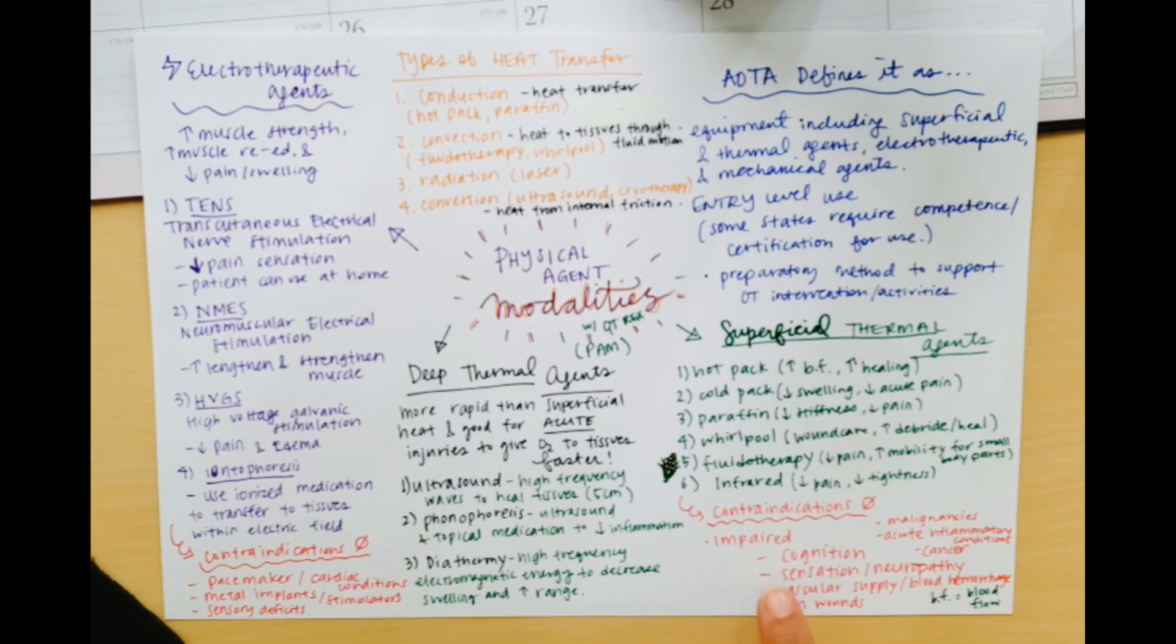So some of the few contraindications for using superficial thermal agents are listed down here. Several of them carry over to other thermal agent uses. And over time, they kind of sound similar. So the main things you want to look out for are impaired cognition, impaired sensation or neuropathy, vascular supply or blood hemorrhage problems, and open wounds. Cognition and sensation are pretty straightforward. You need both in order for the patient to let you know if they're in any discomfort or pain. And if they can't tell you that, then these modalities can be unsafe because it can cause burn or the metrics might be too high, there might be pain or discomfort going on. So that's very important that they are cognitively intact and that their sensation is intact to report to you. Overall, malignancies and acute inflammatory conditions as well as cancer are contraindications as well.